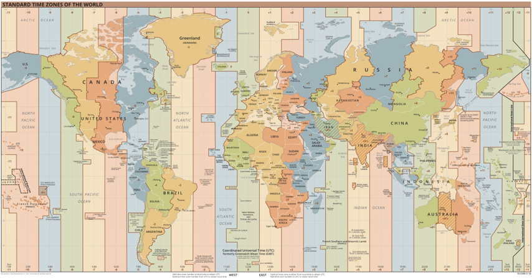See the list of military time zones for letters used in addition to Z in qualifying time zones other than Greenwich. On electronic devices that only allow the current time zone to be configured using maps or city names, UTC can be selected indirectly by selecting Reykjavik, Iceland, which is always on UTC and does not use daylight saving time.